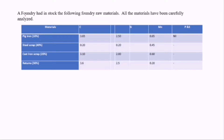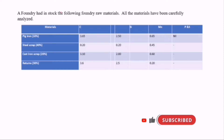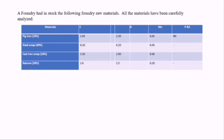So this is the question given to us. If a foundry had a stock, the following materials have been carefully analyzed: we have carbon, silicon, manganese, phosphorus, and sulfur. We have the pig iron to be 10%, the steel scrap to be 40%, the cast iron scrap to 20%, and the returns to be 30%.